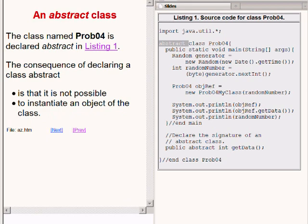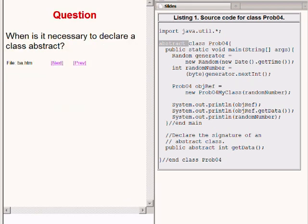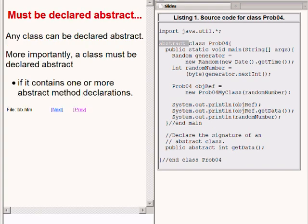The consequence of declaring a class abstract is that it is not possible to instantiate an object of the class. Any class can be declared abstract, so an interesting question is, when is it necessary to declare a class abstract?